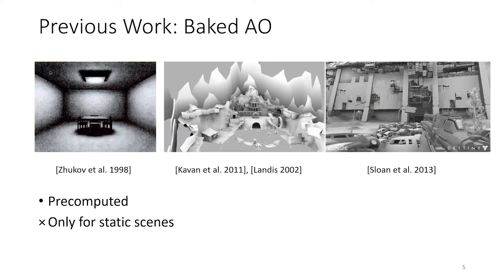Precomputed ambient occlusion has existed for quite some time. This can provide a high-quality occlusion term stored in, for example, textures or per-vertex for polygonal objects. However, it's baked and it can't be changed at runtime, and as such does not work well for dynamic objects or dynamic characters.